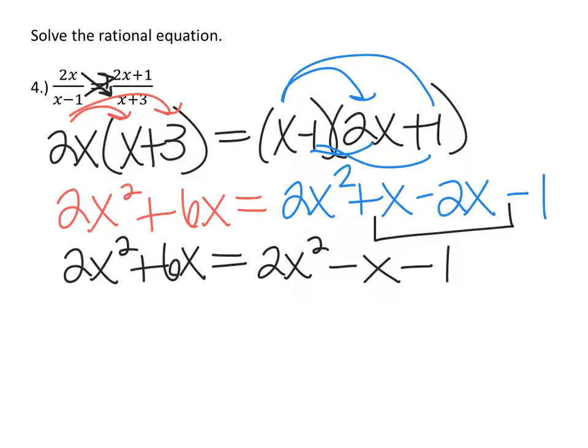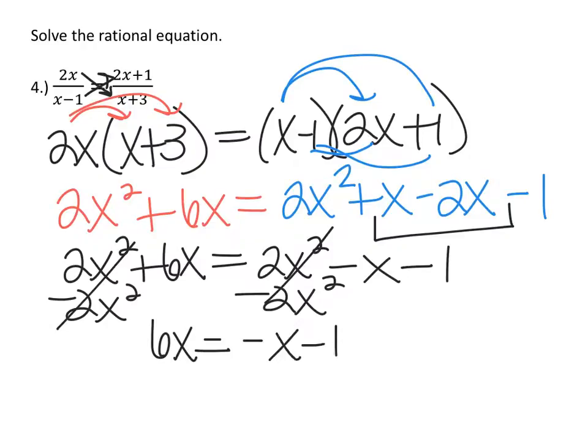Now I want to move everything on one side of the equal sign. So I want to subtract 2x squared from both sides. That's going to cancel on both sides, and I have 6x equals negative x minus 1.